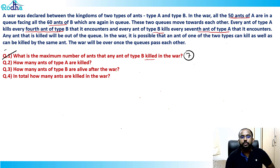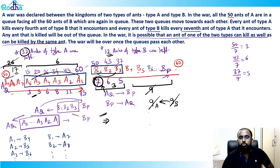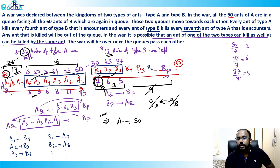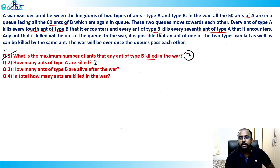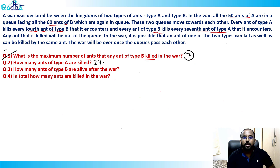Question 2: How many ants of type A are killed? Out of 50 type A ants, 17 plus 6 (a1 to a6) = 23 survive. So 50 minus 23 = 27 ants of type A are killed. The answer is 27.